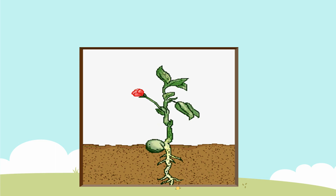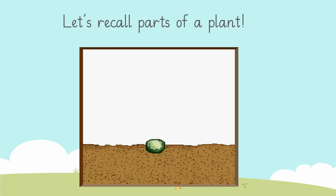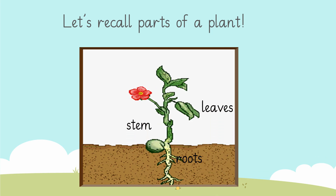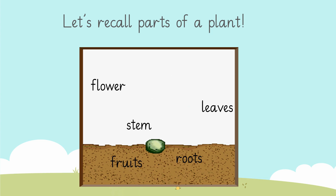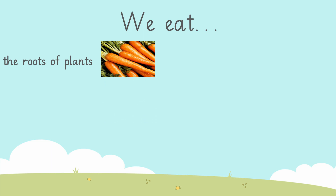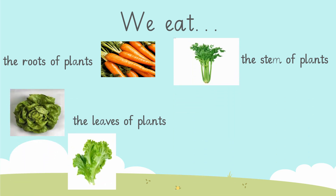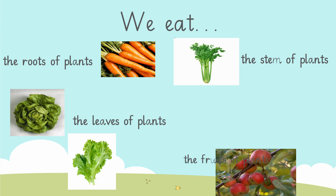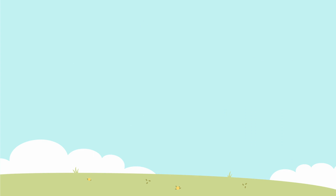Dear learners, before we begin today's lesson, let's recall the different parts of a plant learned in the previous lesson. Can you name the parts of the plant? Yes, they are roots, stem, leaves, flowers, and of course fruits. We eat roots of some plants, for example carrots. We eat stem and leaves of some plants, for example coriander, spinach, and lettuce. And we eat fruits as well.